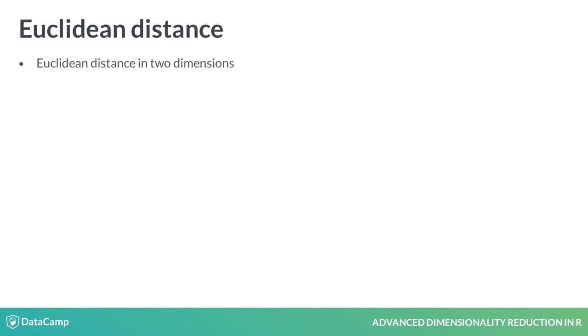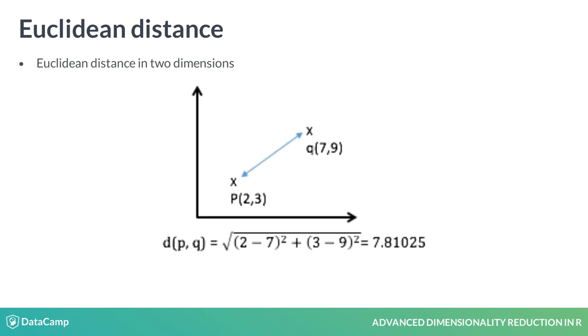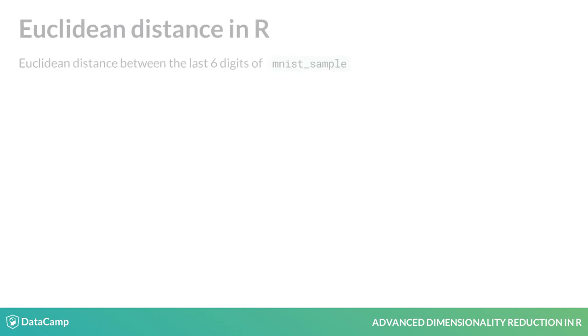In a two-dimensional space, the Euclidean distance between two points P and Q is the length of the line segment connecting them. In this example you can see how we compute the Euclidean distance between the points P and Q. Euclidean distance can also be generalized to high-dimensional vectors. You can use the function dist to compute the Euclidean distance matrix between the rows of a data matrix.